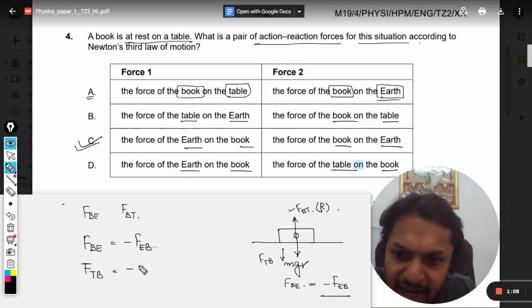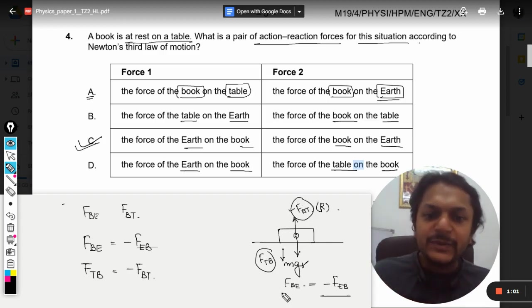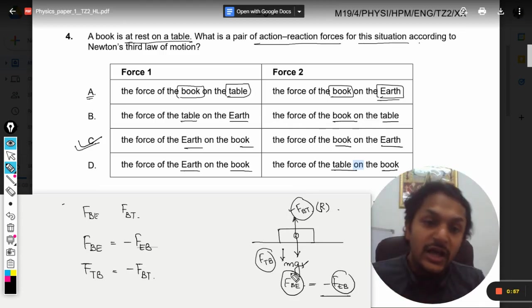One will be force on the book by the earth equal to the force on the earth by the book. Another will be force on the table by the book and the force on the book by the table. Out of our options A, B, C, D, only C talks in the correct manner, so C will be the correct answer. A, B, and D are wrong.